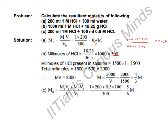The millimoles of HCl already present in the solution: volume is 1500 ml and molarity is 1, so millimoles = 1500 × 1 = 1500 millimoles. We add 500 more millimoles, so the total millimoles is 2000. Now to find molarity: molarity × volume (in ml) = millimoles, so molarity = 2000 / volume.